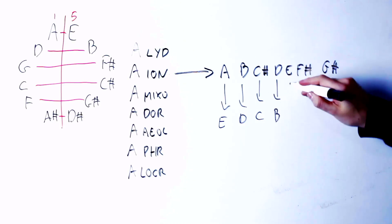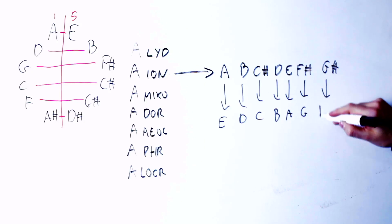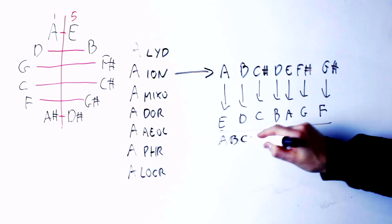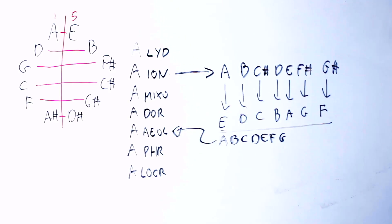The C sharp note becomes a natural C, the D note becomes a B note, the E becomes an A, the F sharp becomes a G, and the G sharp becomes an F. So I obtain A B C D E F G, which is the A Aeolian scale.